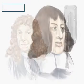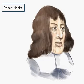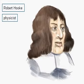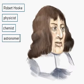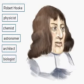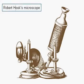An Englishman, Robert Hooke, who lived from 1635 to 1703, is considered to have discovered the cell. Hooke was an all-round scientist. He was a physicist, a chemist, an astronomer, an architect, and a biologist. He also constructed his own microscope.